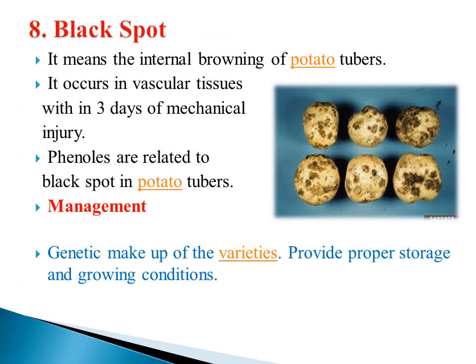The eighth disorder is black spot, meaning internal browning of potato tubers. It occurs in vascular tissue within three days of mechanical injury — during intercultural operations like weeding or at the time of harvesting. Phenols are related to black spot in potato tubers. Management includes developing genetic varieties resistant to black spot and providing proper storage and growing conditions to avoid mechanical injury before storage.